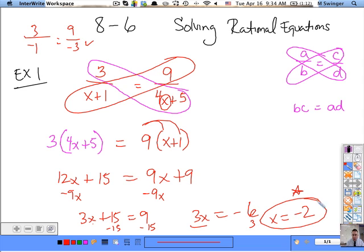Alright. So this is our answer. There you go. So example 1. Basically this is if you have a fraction equal to a fraction. You cross multiply.